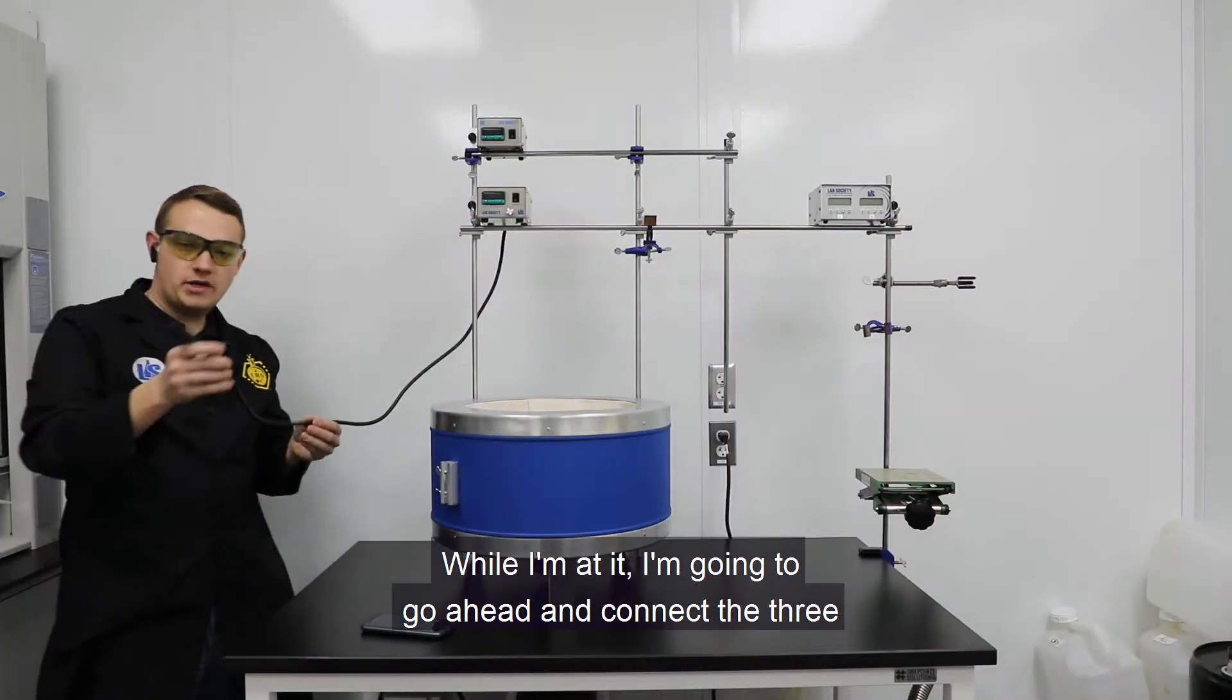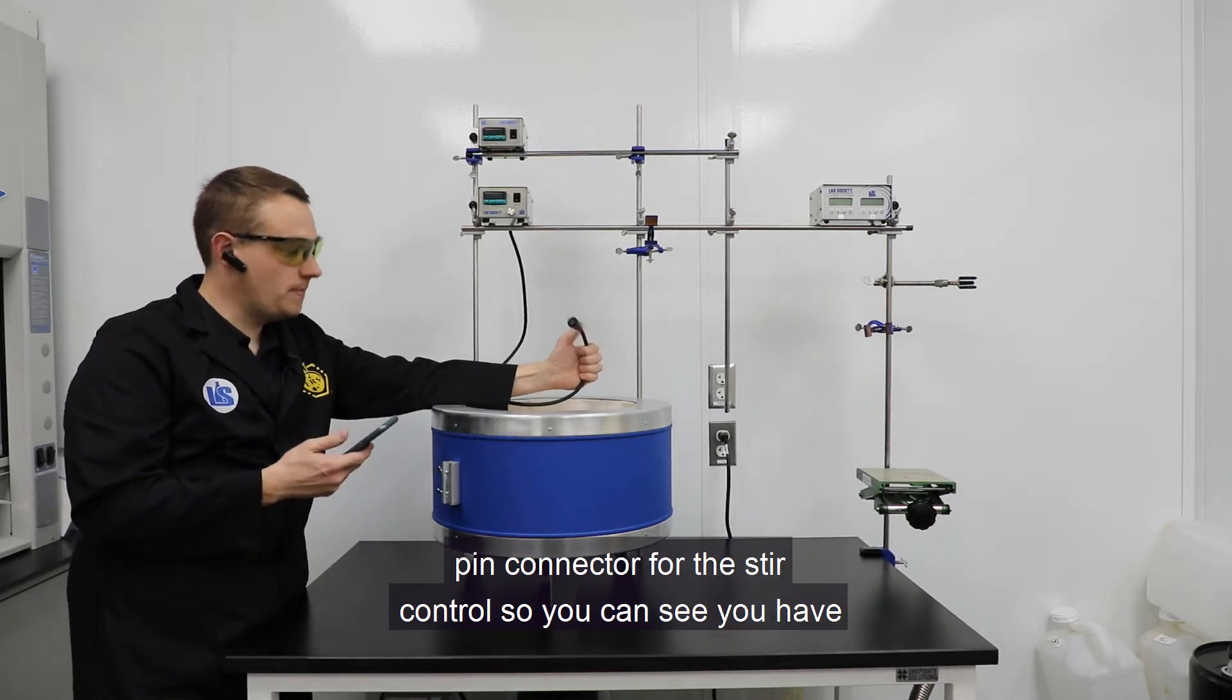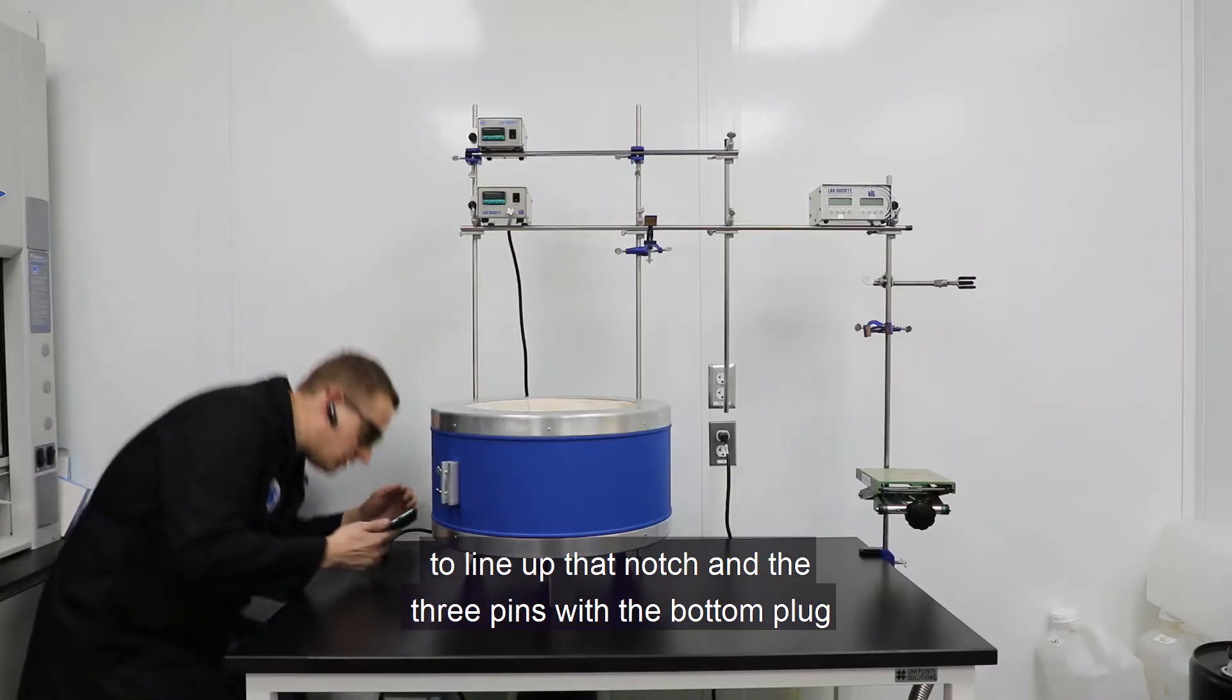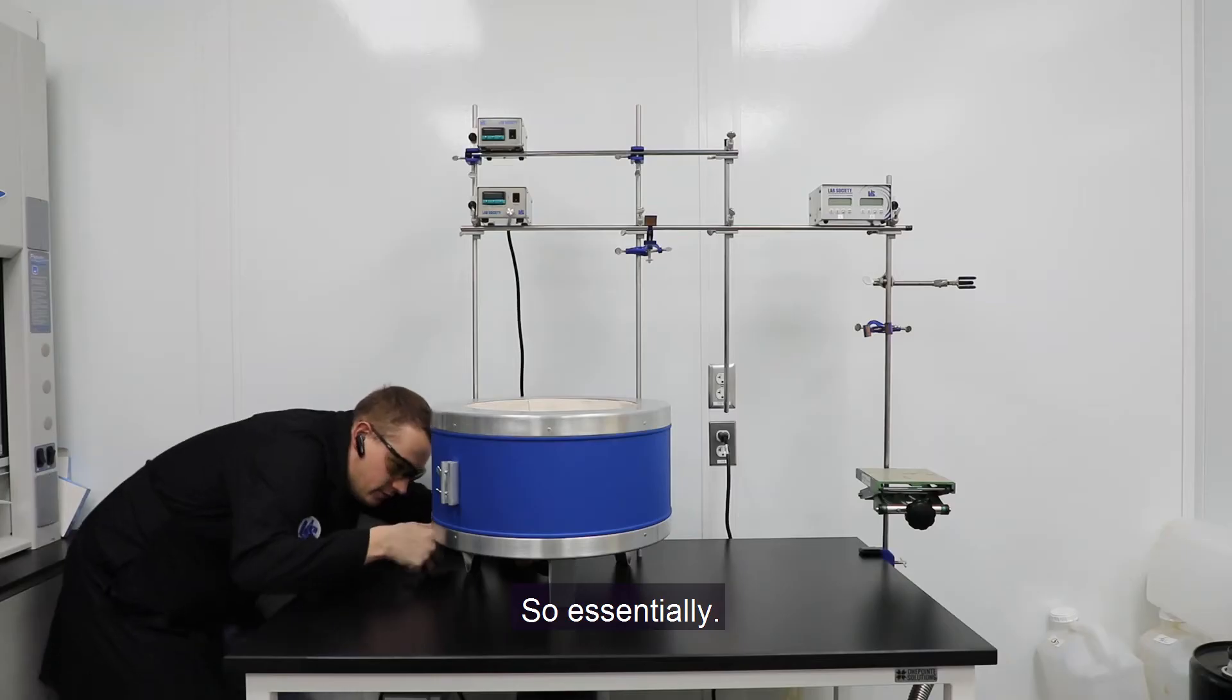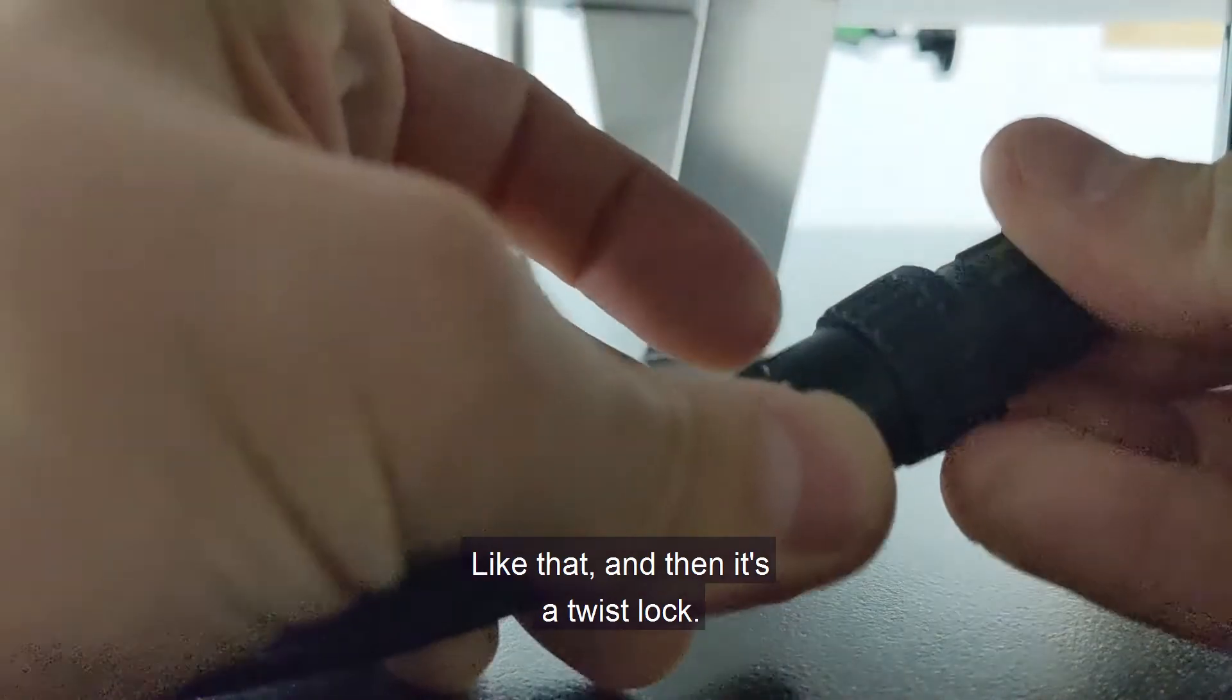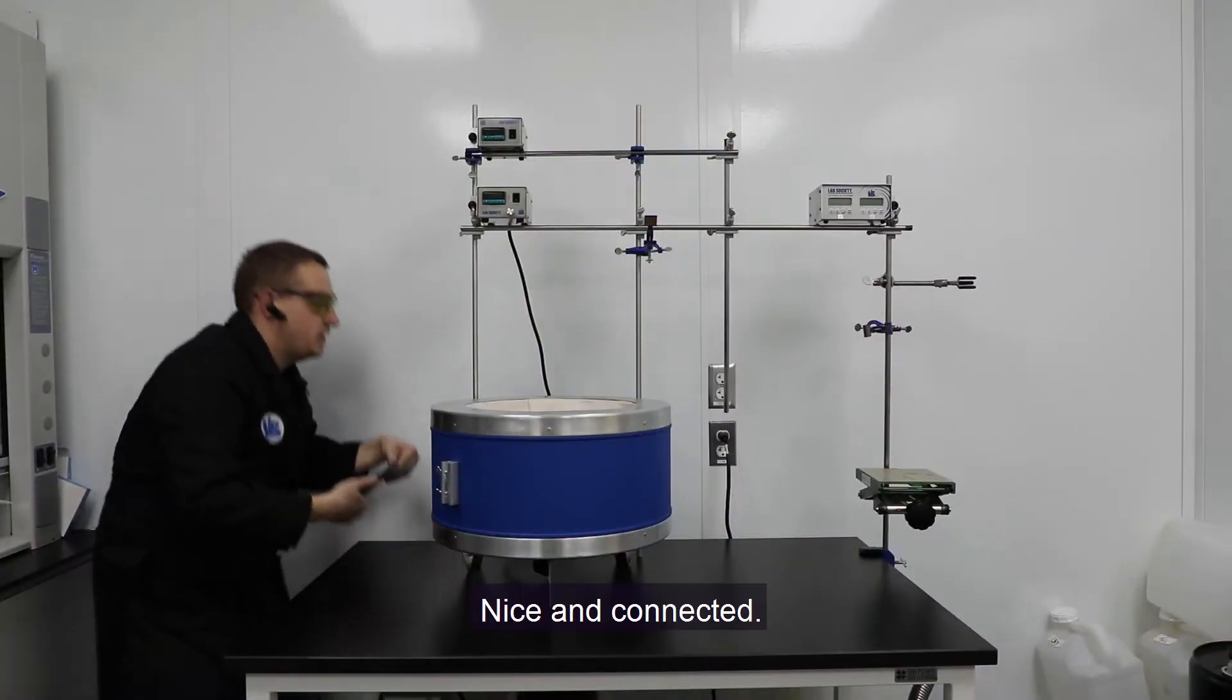While I'm at it, I'm going to go ahead and connect the three-pin connector for the stir control. So you can see you have to line up that notch and the three pins with the bottom plug on this mantle right here. So essentially, like that. And then it's a twist lock, so we'll just, boom. Nice and connected.